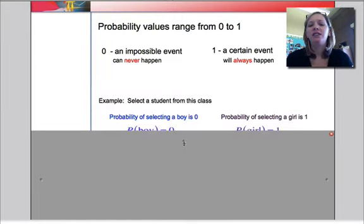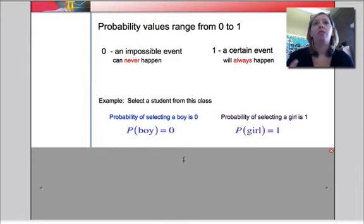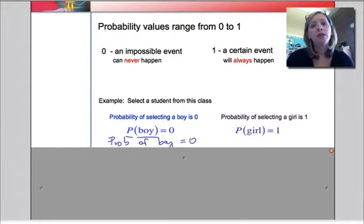Alright, so let's do some examples. If we were to select a student from our class, the probability of selecting a boy would be 0. There's no boys in our class. So one way that we can write that using notation is that P(boy), the probability of selecting a boy, is equal to 0. Now, if we look at the students in this class, the probability of selecting a girl is 1. Because if I were to randomly select any student at all, we know that that student is going to be a girl. So the probability of choosing a girl is 1. It's certain. It has to happen.